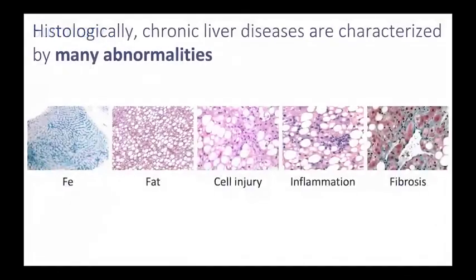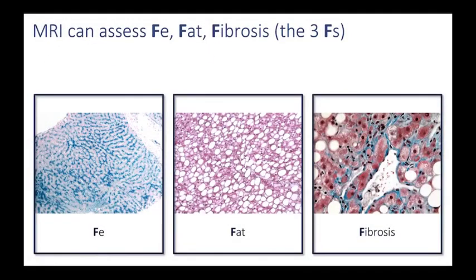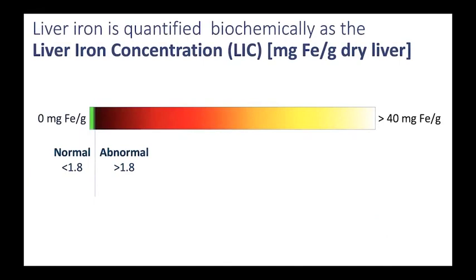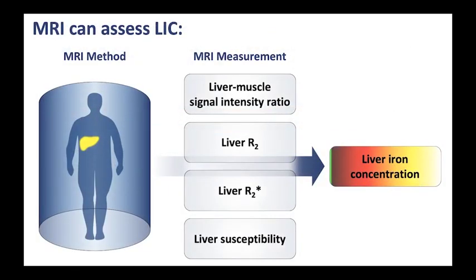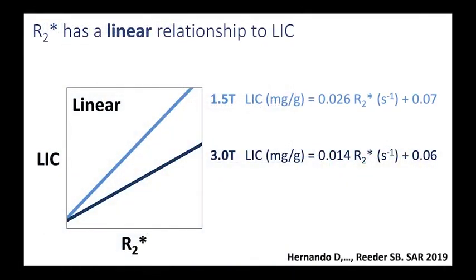That was a whirlwind tour through the evaluation of iron, fat, and fibrosis. Let's summarize. Histologically, chronic liver diseases are characterized by many abnormalities. In the year 2020, MRI can assess three of them fairly reliably — the three Fs: iron, fat, and fibrosis. Liver iron is quantified by the liver iron concentration, or LIC. MRI can assess the LIC through at least four different methods; today we focused on R2*. R2* has a linear relationship to LIC, and the formulas that convert R2* to LIC are being described: at 1.5T, LIC = 0.026 × R2* + 0.07, and at 3T, LIC = 0.014 × R2* + 0.06.